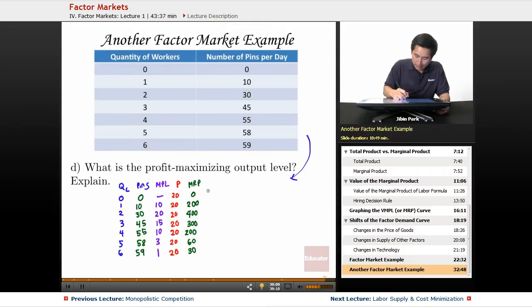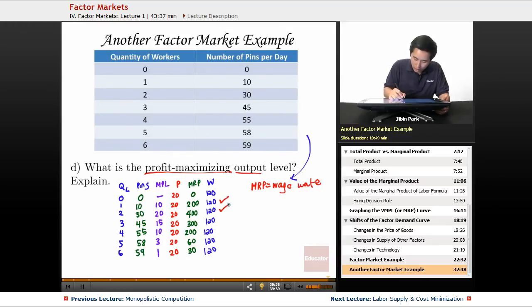The MRP is 0, 200, 400, 300, 200, 60, and 30. Now we need the cost information—the wage rate is $120 for each worker. What is the profit-maximizing output level? The formula uses where MRP equals the wage rate. So yes, you hire the first worker, yes the second, yes the third and fourth, but not the fifth worker.